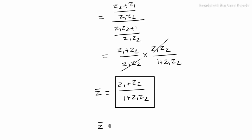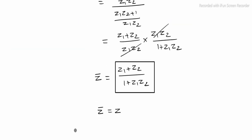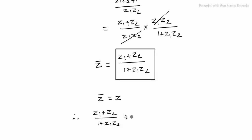Observe that z bar is equal to z. Since the conjugate of z equals z itself, z is a real number. Therefore, z1 plus z2 divided by 1 plus z1 z2 is a real number, which is what we had to prove.